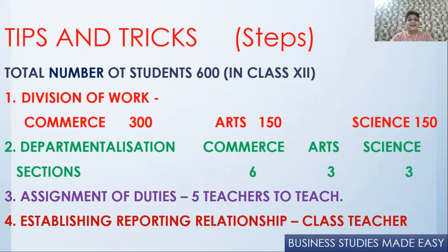Now let's take an example closer to home. Say there are 600 students in class 12. The first step is identification and division: these 600 students are divided into commerce, arts, and science — say 300 in commerce, 115 in arts, and 115 in science, totaling 600. The first step is to divide them into different disciplines according to what they have chosen.